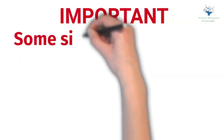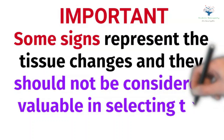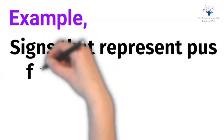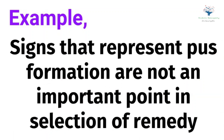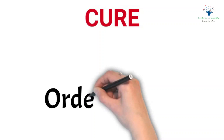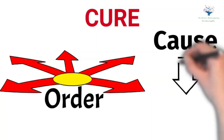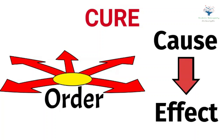One important thing to be noted is that though signs and symptoms represent the change of state, some signs represent tissue changes and they should not be considered valuable in selecting the simillimum. For example, signs that represent pus formation are not an important point in selection of the remedy. Kent again reminds us about the order of cure: cure is only possible when the establishment of order starts from the innermost — in other words, cure should be from cause to effect. First, the innermost is ordered, which flows to the outermost, thereby making the functions of the body ordered.